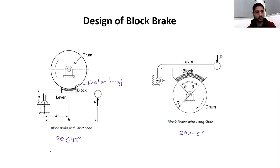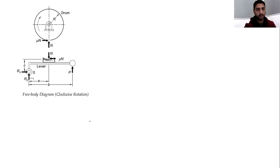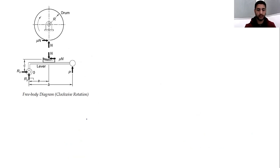So note that for short shoe, pressure is uniform, and for long shoe, pressure is non-uniform due to the long curvature. If two theta is less than or equal to 45 degrees, it is called short shoe. Now let us find out the torque capacity of the brake, since our main objective is to determine the braking torque.